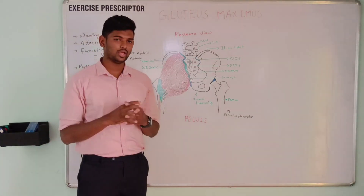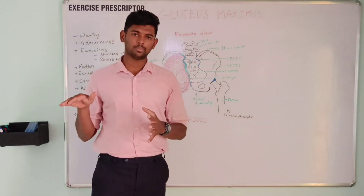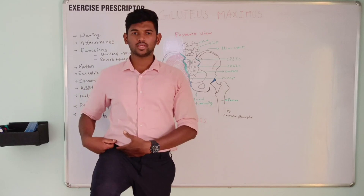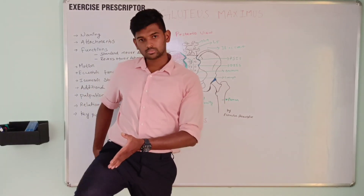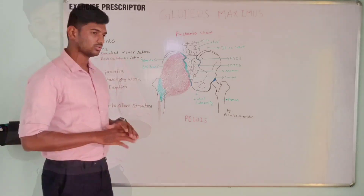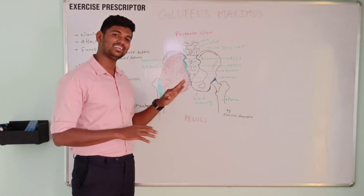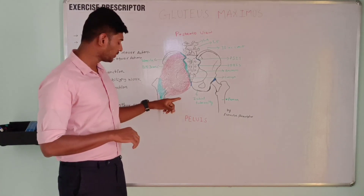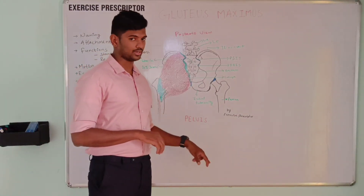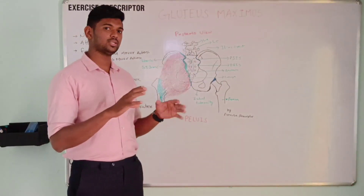An additional action is that gluteus maximus also helps to horizontally abduct the hip when the hip is flexed 90 degrees. If a horizontal pull happens in the gluteus maximus, it helps to horizontally abduct the hip. Also, theoretically it can extend the knee because it is connected over the iliotibial band, which crosses the knee anteriorly — so those connections help to extend the knee.